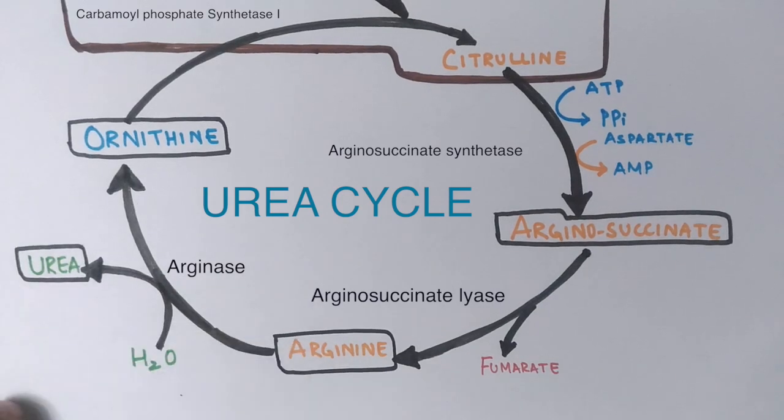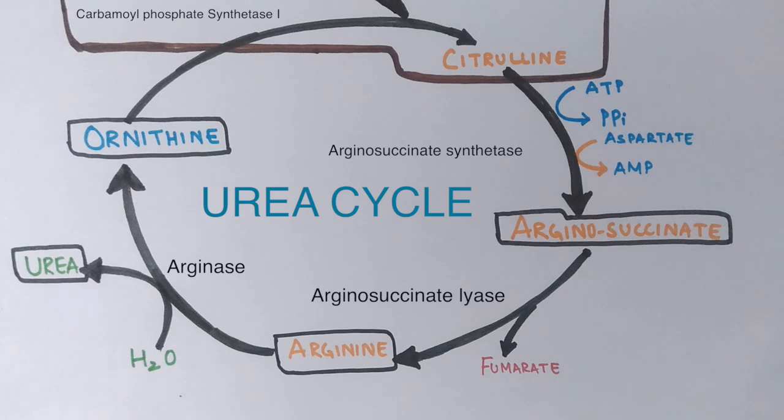Finally, in the presence of the enzyme arginase and a water molecule, urea is released from arginine, and ornithine is recycled back to continue the cycle. This is how urea is produced from ammonia in the urea cycle.